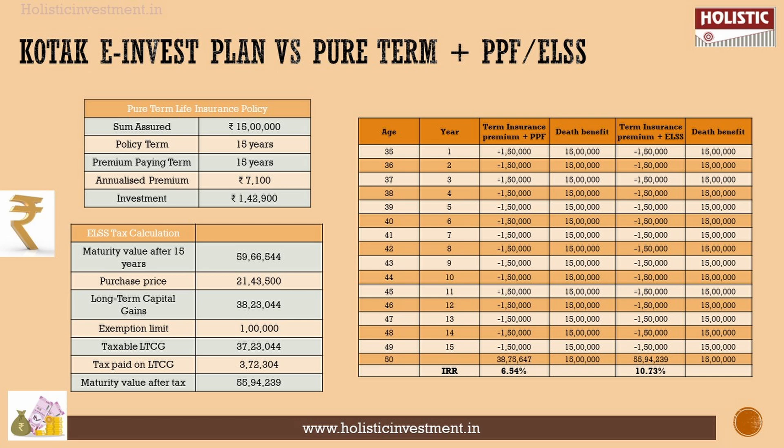If we calculate investing in these two combinations, the PPF portion gives an IRR of around 7% — a guaranteed return. The 6.54% from the Kotak plan is a similar level but not guaranteed. If you look at ELSS mutual funds, the maturity value comes to 55 lakhs post-tax, or 59 lakhs pre-tax. This is a drastic difference compared to the Kotak e-Invest Plan. The IRR for ELSS comes to 10.73%, which is an inflation-beating return.